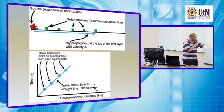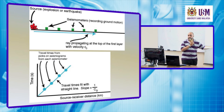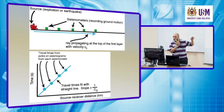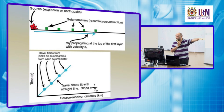This time is called travel time — it represents the time taken by the direct wave to move from the source to the receiver.